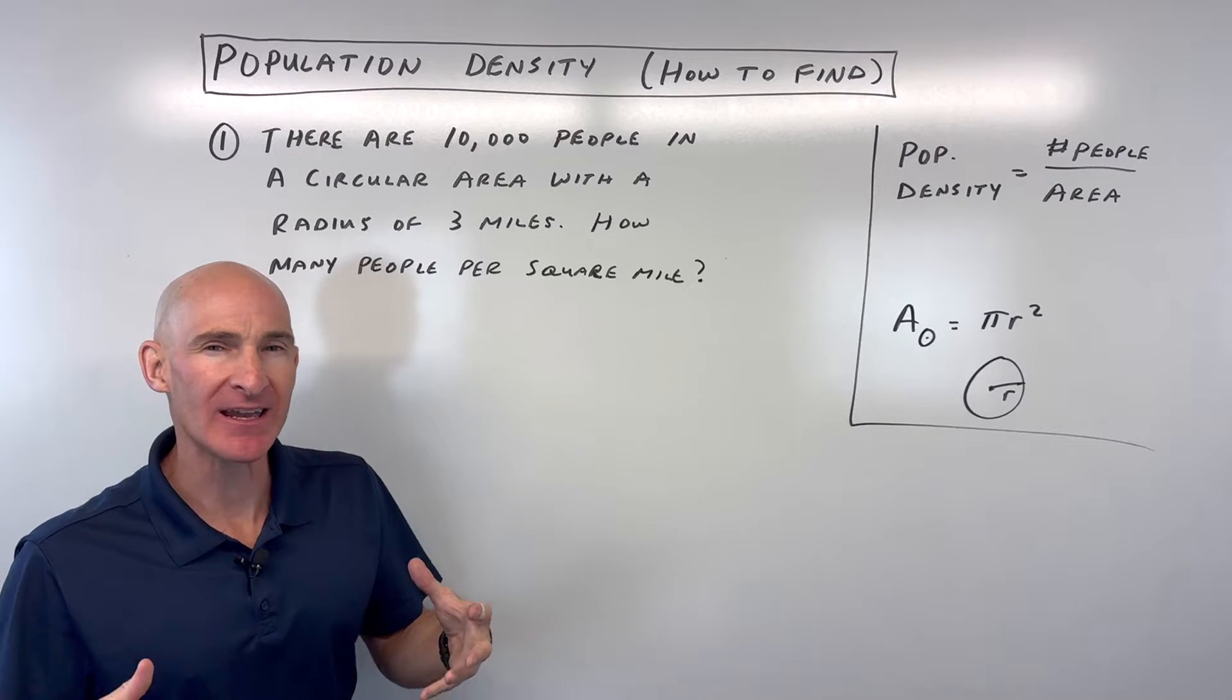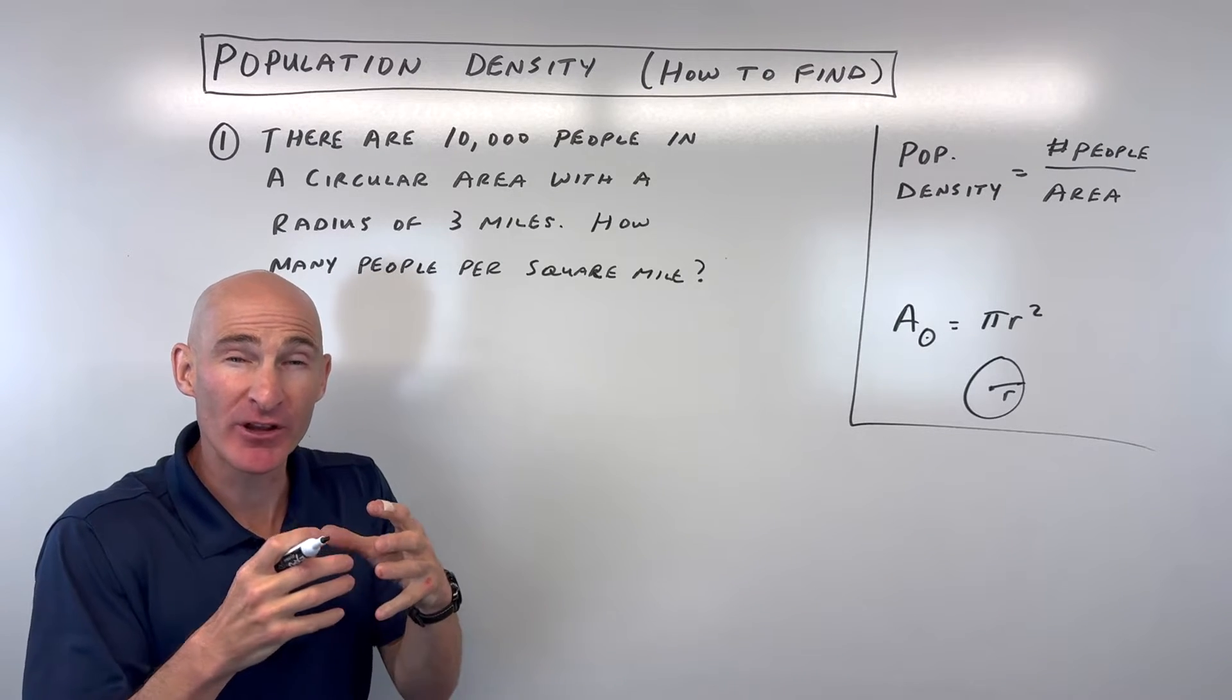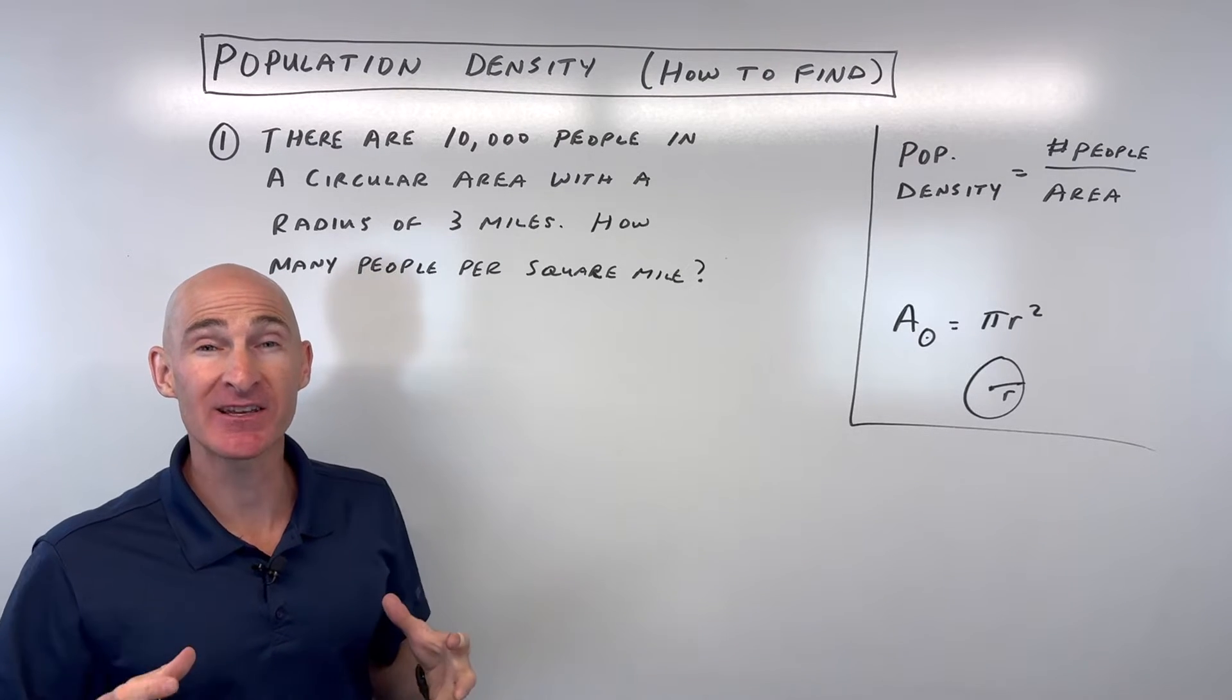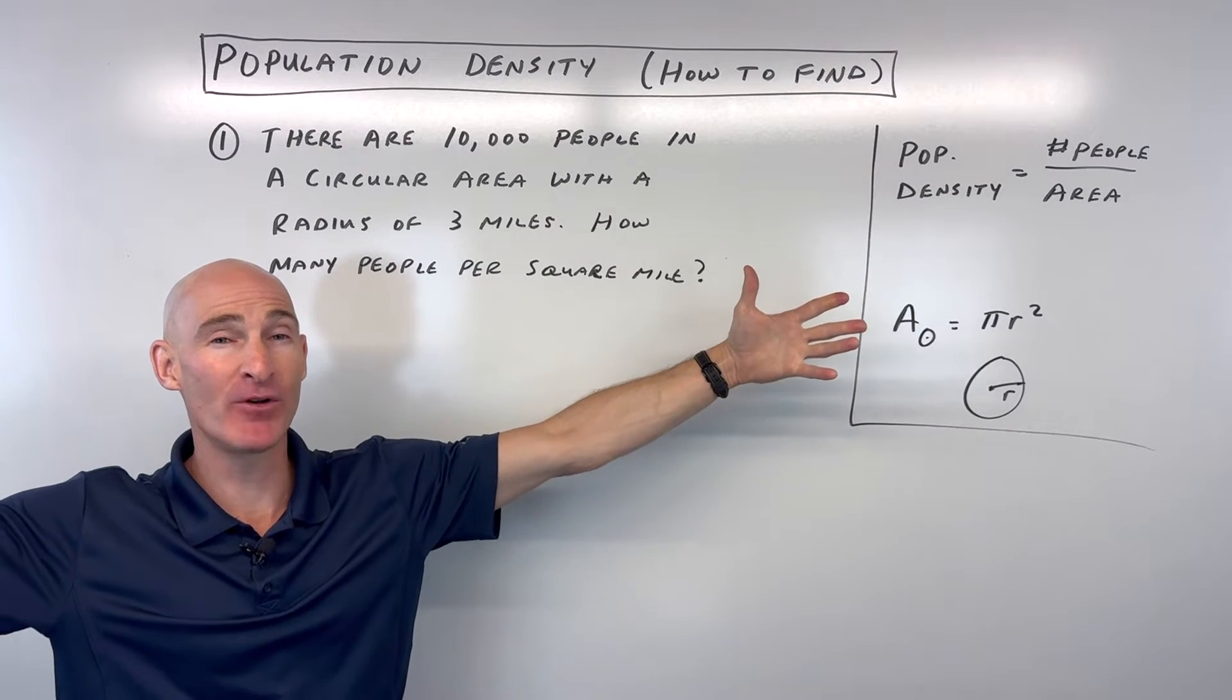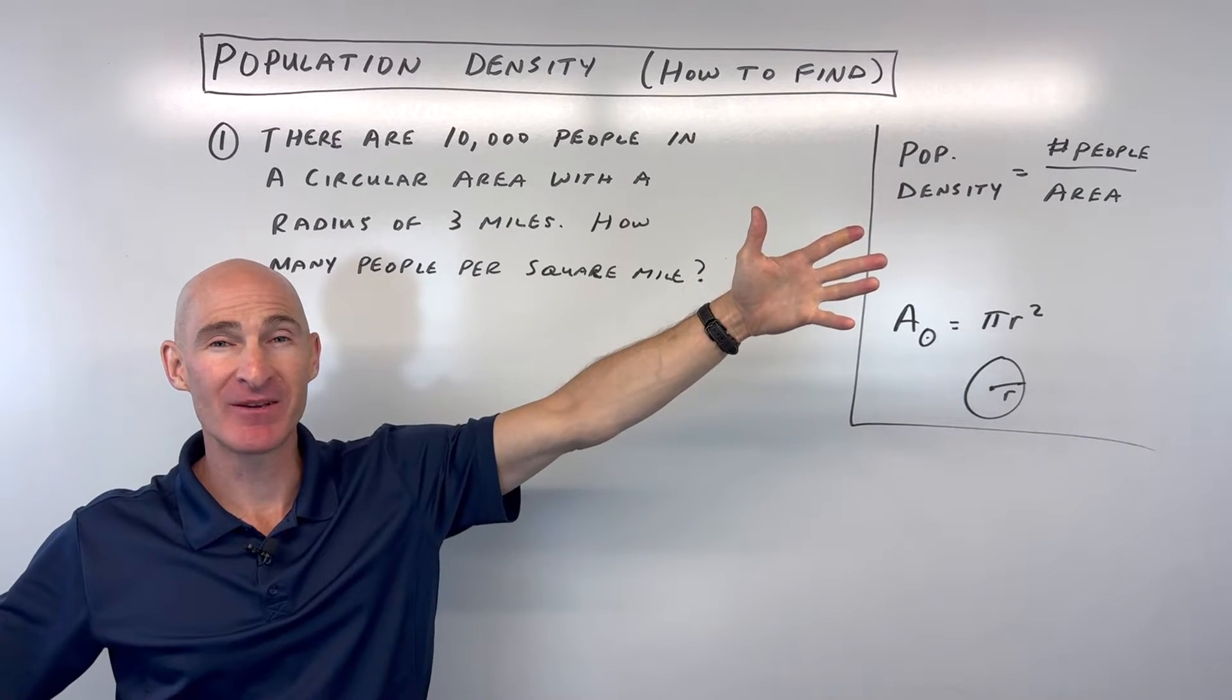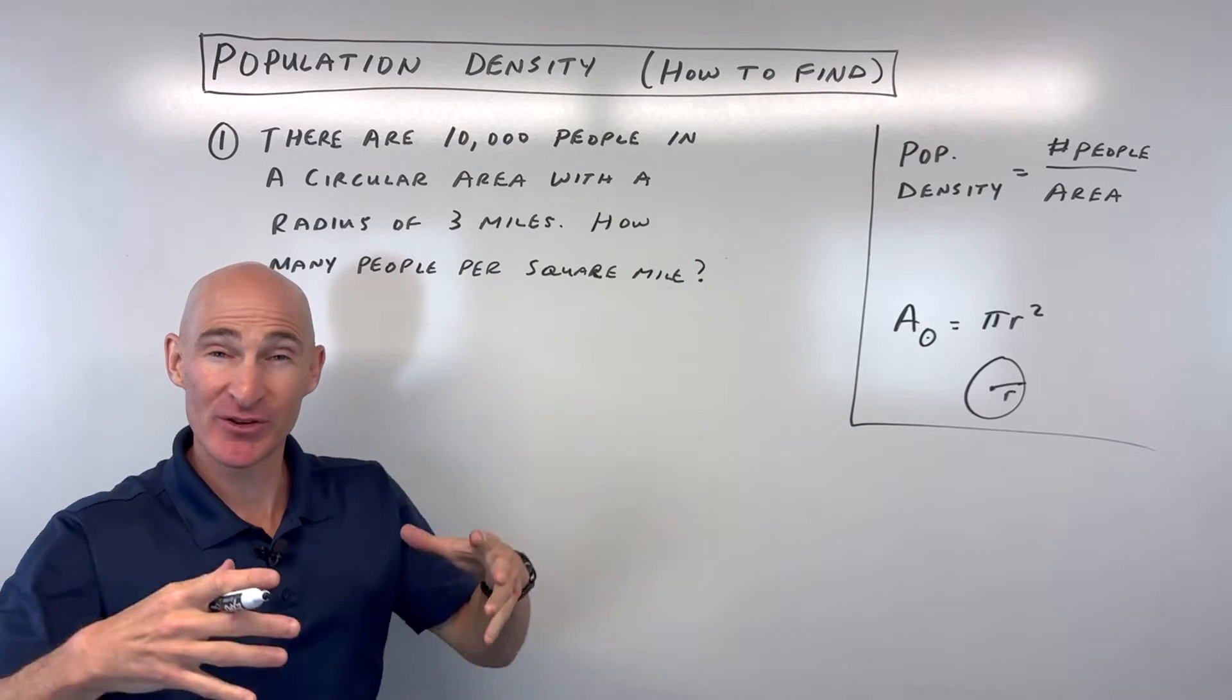Well, we all kind of know that real density means the people are really close together and it's just hustling and bustling, whereas if you're out in a rural area it's not very dense. You hardly see anybody on the road and people are really spaced out.